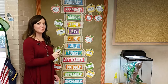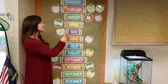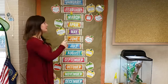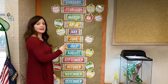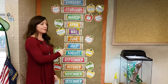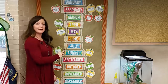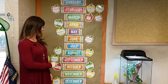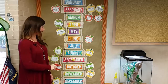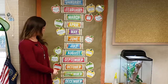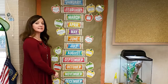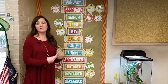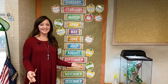So let me sing that song for you. It would go like this: January, February, March and April, May, June, July and August, September, October, November, December. These are the months of the year.